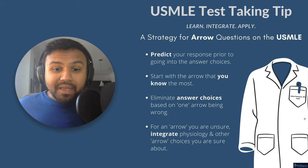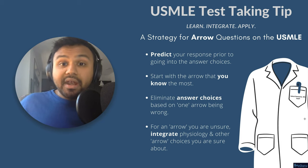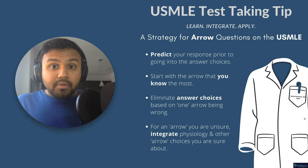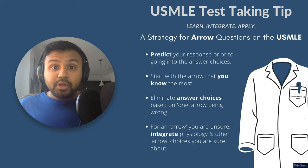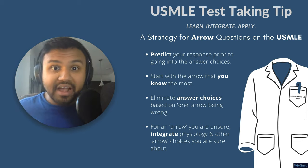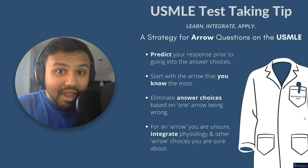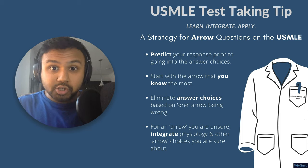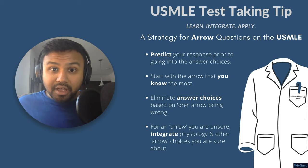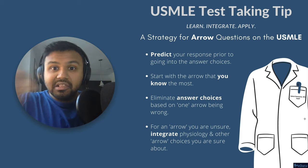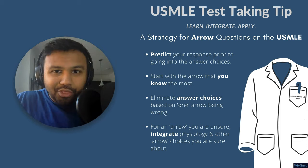The third step is going to be to eliminate the answer choices based on one arrow being wrong. Going back to our question about the patient with heart failure having low cardiac output, you know that the other answer choices that have high cardiac output are probably going to be wrong. So you need to eliminate those based on just one arrow of the whole thing being wrong.